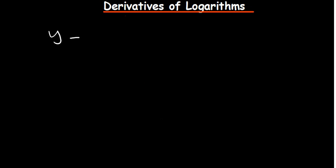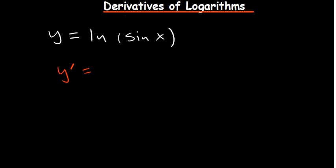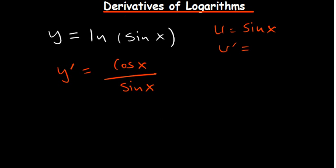Let's make it more interesting: natural log of sine of x. Ask yourself what's the derivative of what is in the brackets. The derivative of sine of x is cosine of x, so we get cosine x over sine x, which equals cot x.